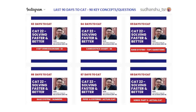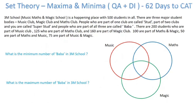Hi friends, welcome to the last 90 days to CAT series. In the last part we talked about four-set Venn diagrams, and today we are talking about Set Theory maxima and minima problems — another very interesting aspect of set theory. 3M School is a happening place with 500 students in all.